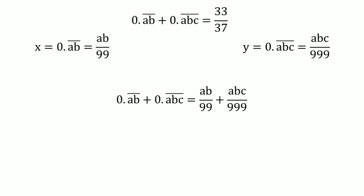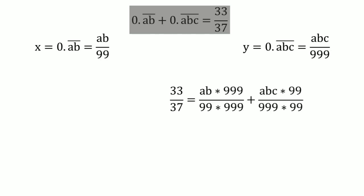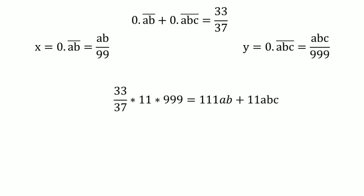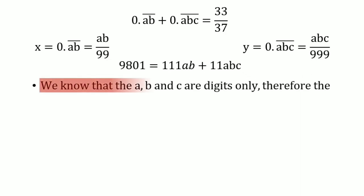We know the sum equals 33/37, so we substitute that in and take the common denominator. After canceling terms to simplify, we arrive at: 9801 = 111·ab + 111·abc, where ab and abc are two-digit and three-digit numbers formed by those digits.